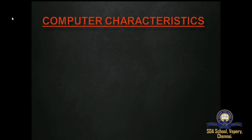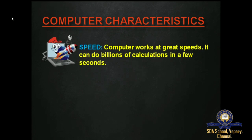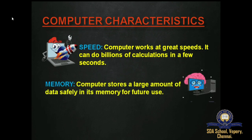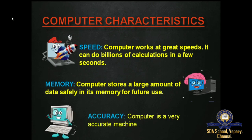The next topic is computer characteristics. The first characteristic is speed — a computer works at great speeds and can perform billions of actions in just a few seconds. The next characteristic is memory — a computer stores a large amount of data safely in its memory for future use. The next is accuracy — a computer cannot make mistakes; it is a very accurate machine.